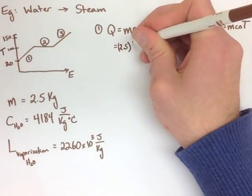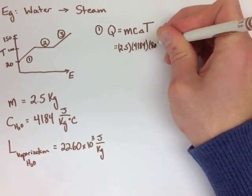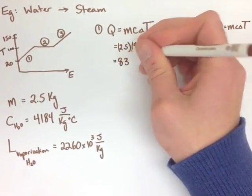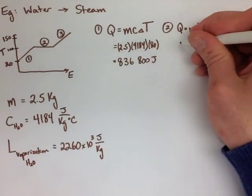So we start plugging our values in and we find that to increase the temperature up to 100 degrees Celsius, which is an 80 degree difference, we need 836,800 joules of energy.